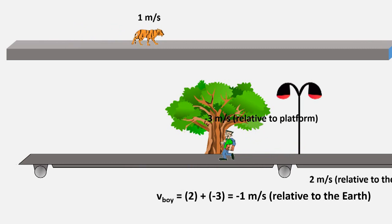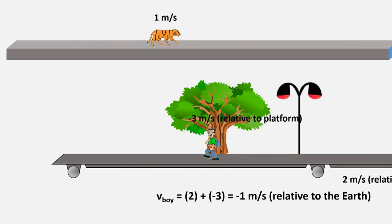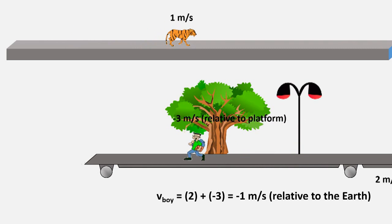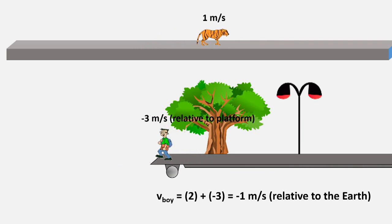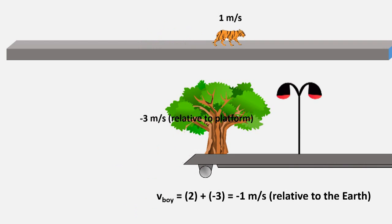his velocity relative to the Earth is 2 plus negative 3 meters per second, which equals negative 1 meters per second, or 1 meter per second to the left. I told you he was in danger.